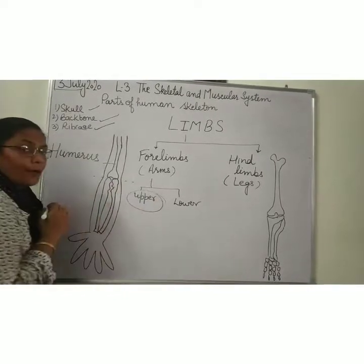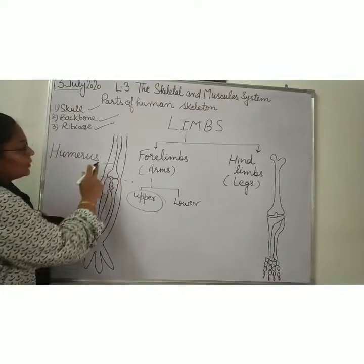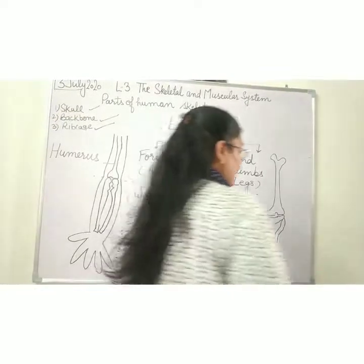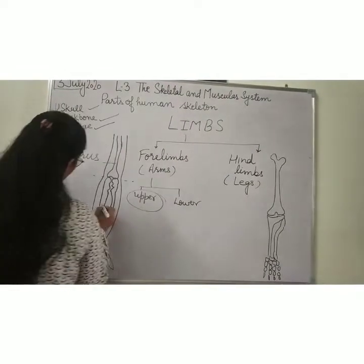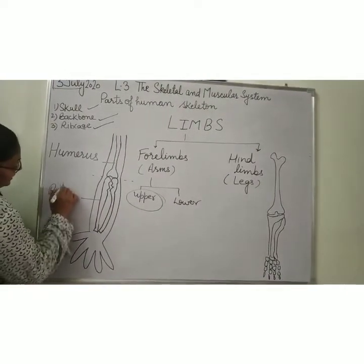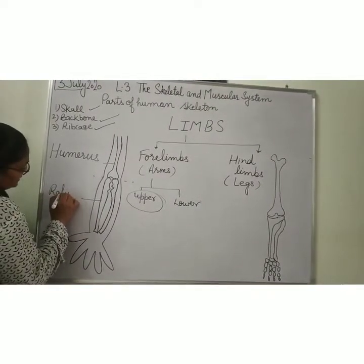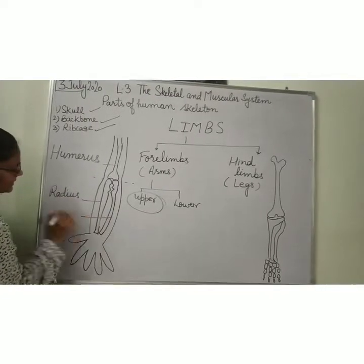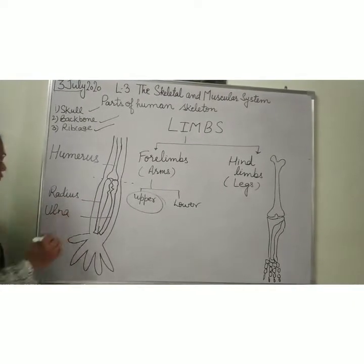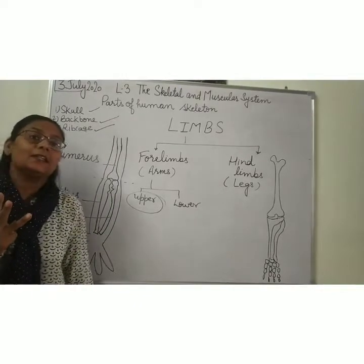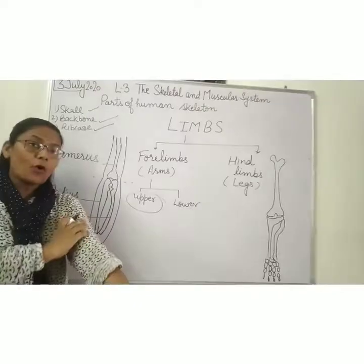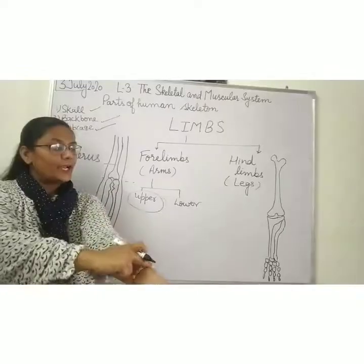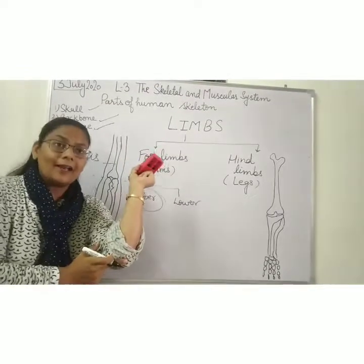The bones present in the lower fore limb are the radius and ulna. So in total, three bones are present in our fore limb: humerus, radius, and ulna.